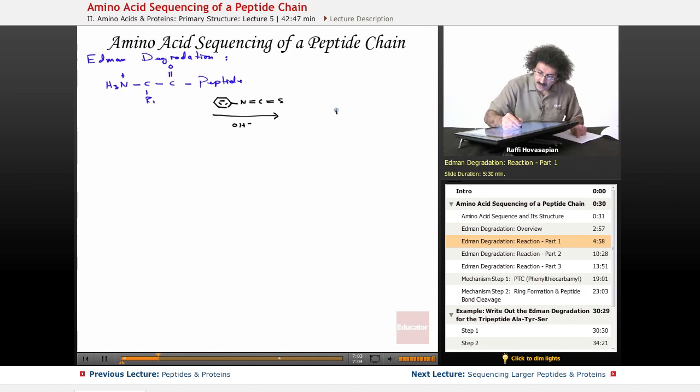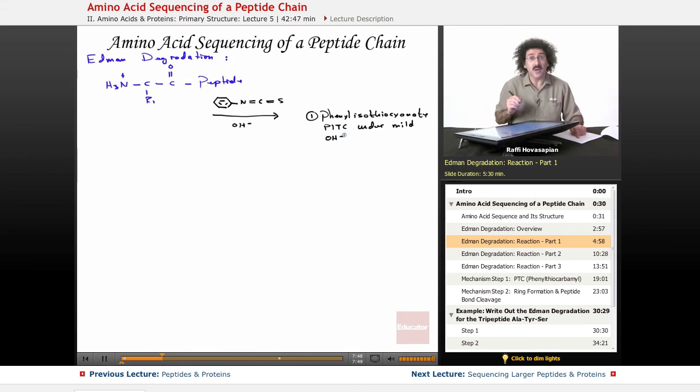We take this peptide and react it with phenyl isothiocyanate under mildly alkaline conditions. Phenyl isothiocyanate, abbreviated PITC, under mild basic conditions. This is the Edman reagent. You'll often hear it called PITC or they'll say use Edman reagent.